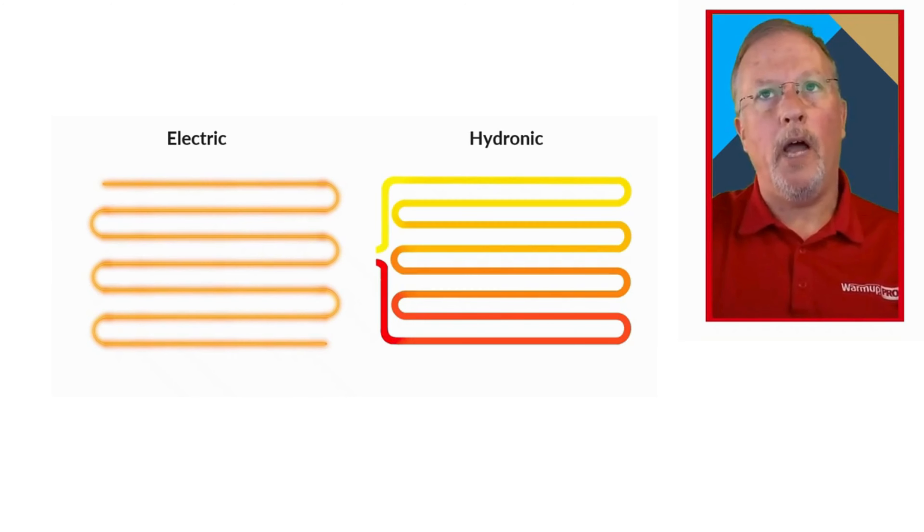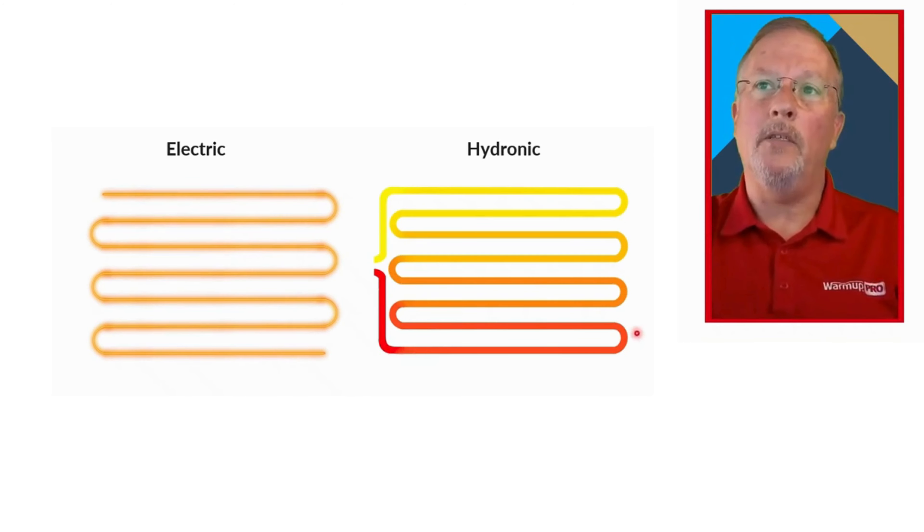This is illustrated here on the hydronic side. Notice how when we come in with a hydronic system, the water enters the piping system in the floor at its highest temperature, typically around 140 degrees Fahrenheit. But as it starts traveling through the floor, it begins to lose the heat until it leaves and returns back to the boiler system, where it can be reheated again, and the cycle starts over.